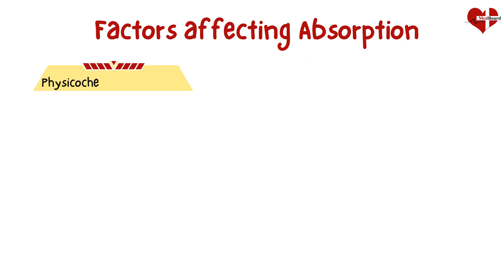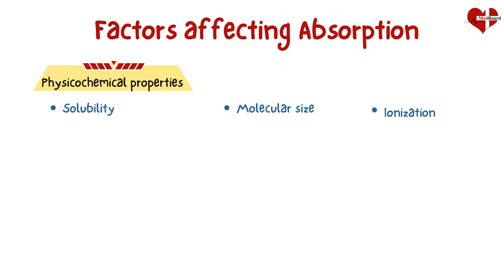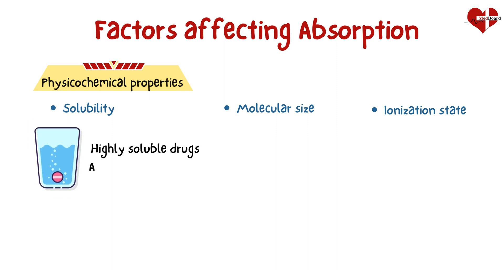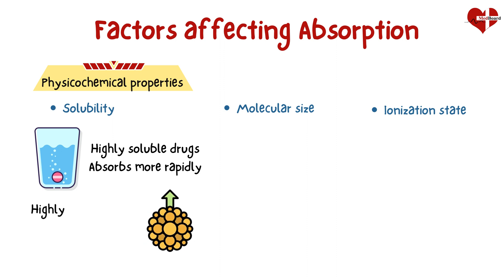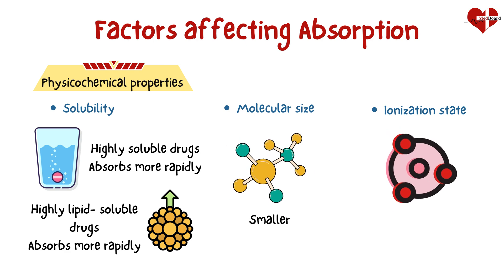The chemical characteristics of a drug impact its absorption. Factors like solubility, molecular size, and ionization state affect how easily a drug can cross cell membranes. Highly soluble drugs with faster dissolution rates tend to be absorbed more readily. Lipid solubility also plays a significant role. Smaller, non-ionized molecules generally have better absorption rates.